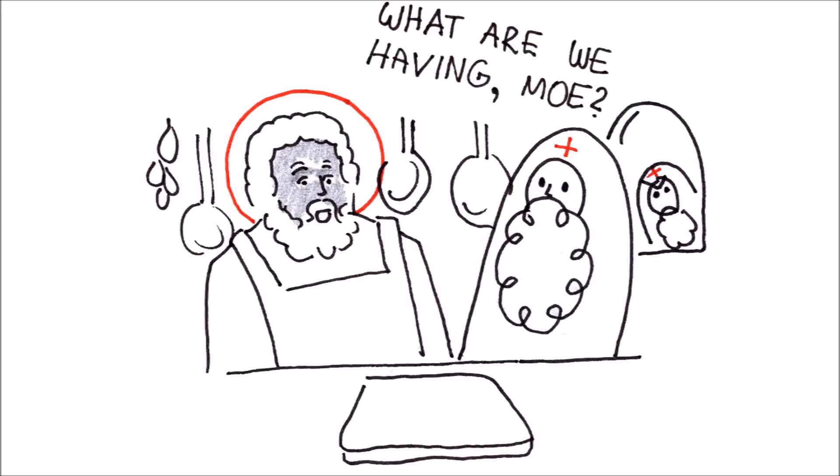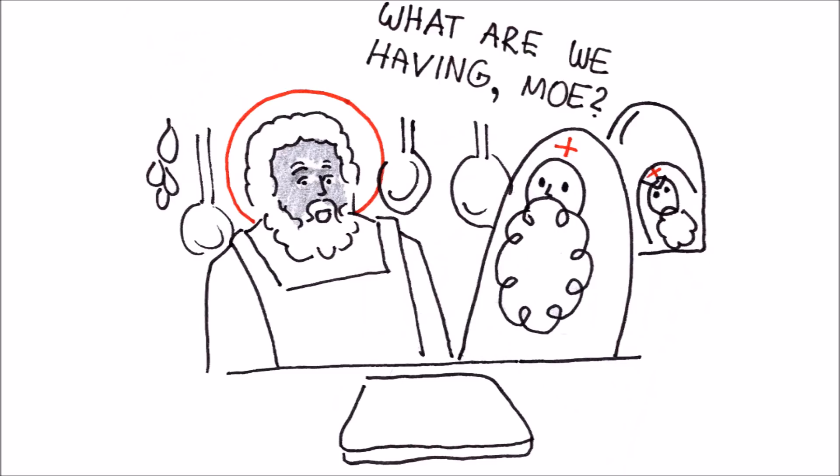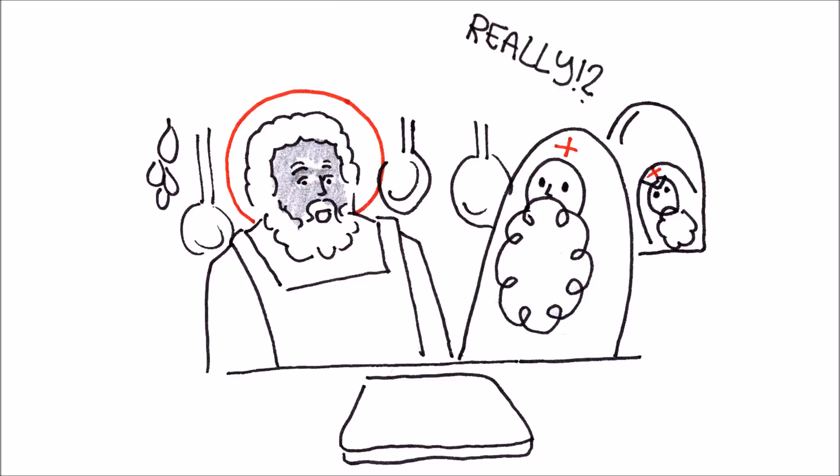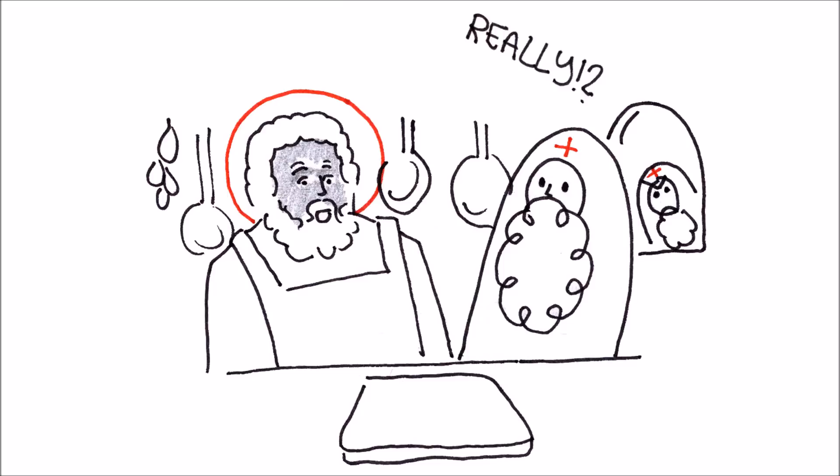During the period of Lent, the abbot forbade everyone to eat. However, St. Moses received some visitors, and he set out to cook some food for them. Some of the monks noticed, and probably not having anything better to do, they immediately set off to tell the abbot,